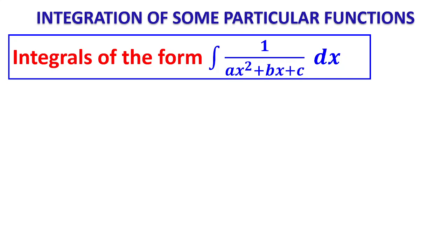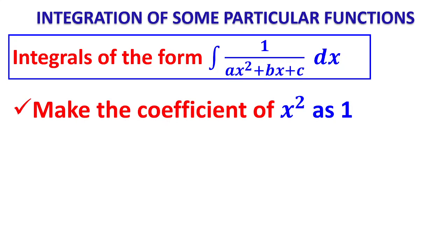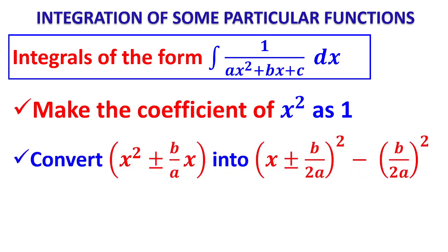We now go for integration of ∫dx/(ax² + bx + c), where ax² + bx + c is a quadratic polynomial. Step 1: make the coefficient of x² equal to 1. Then perform completing the square: write it as x² ± (b/a)x, divide the coefficient of x by 2, giving x ± (b/2a) whole squared, minus the square of that constant. Let us see some examples.